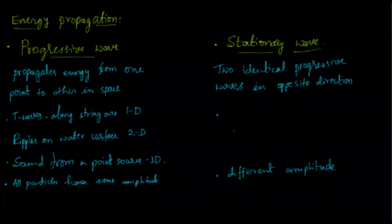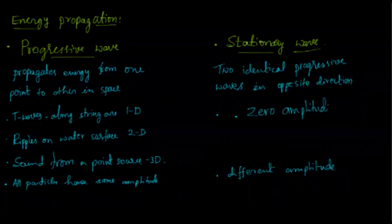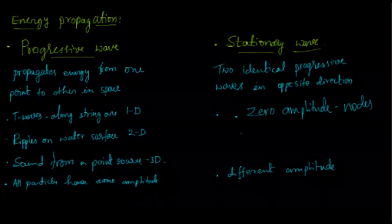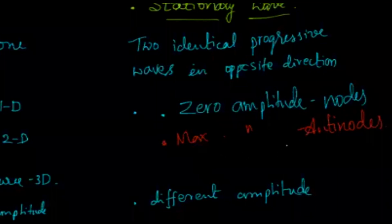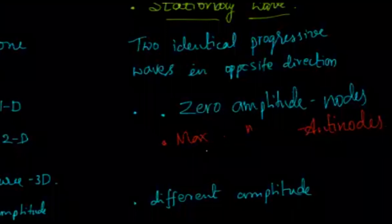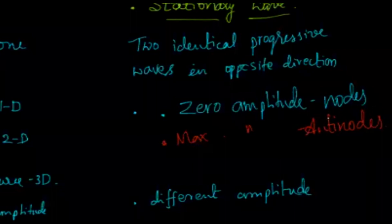As a result of superposition in stationary waves, you will find a few points with zero amplitude — these are called nodes. There are also points with maximum amplitude, called anti-nodes. In a stationary wave, amplitudes are unequal and change from point to point — amplitude is a function of position. From node to anti-node, amplitude increases from zero to maximum, then starts decreasing again.